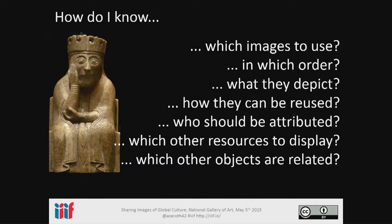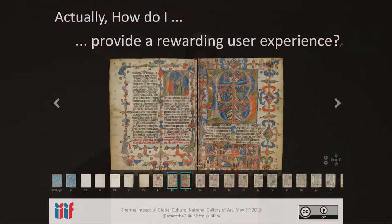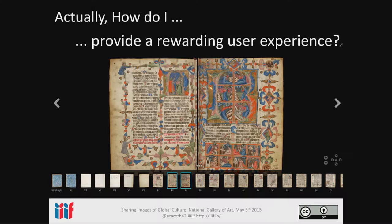That raises a whole raft of questions. How do I know which images I should use? I don't want to include a page from one manuscript in a view of a different manuscript. In which order should I be viewing them? I want to be leafing through the pages in order rather than randomly jumping around. What do they depict? How can I reuse them? Who should be attributed for producing the images or looking after the object? What other resources are there that I can display to the user? So it raises many questions, which we tried to boil down to just one: how do we provide a dynamic, rich, rewarding user experience to the people who want to interact with our objects, with our content?